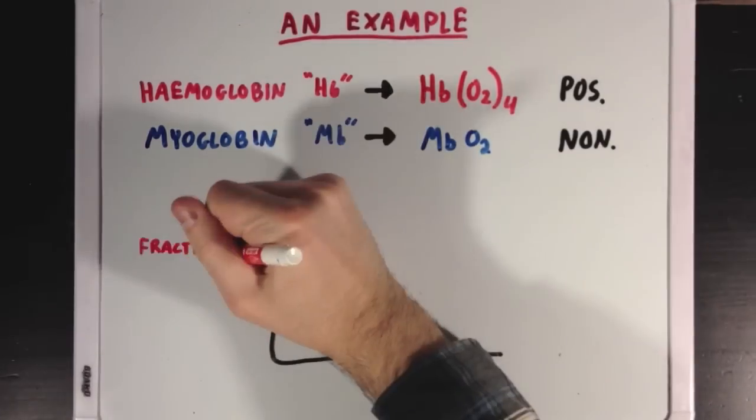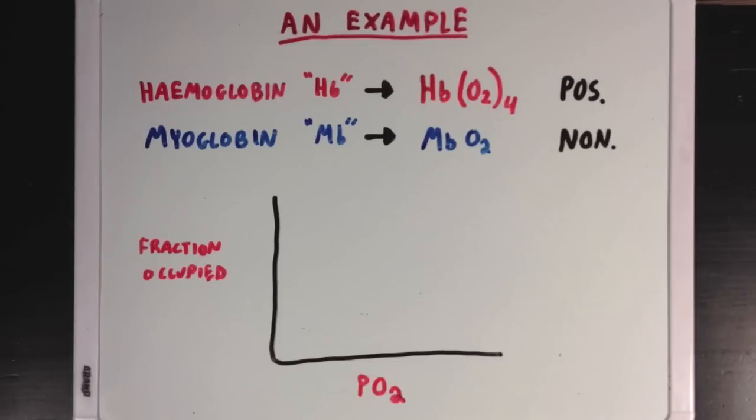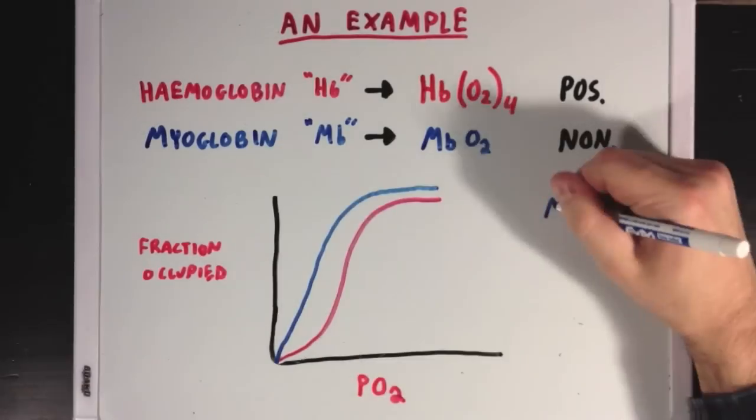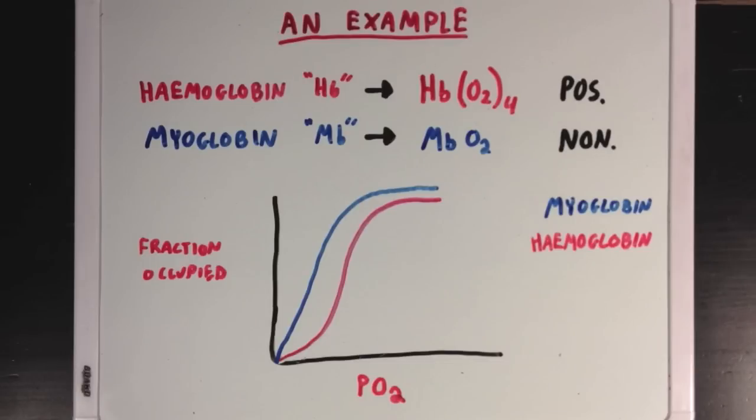If we make a graph where we plot the fraction of active sites bound in each of these proteins versus the pressure of oxygen—remember, oxygen is our substrate here, and since it's a gas, we're going to use pressure instead of concentration—you can see that the red sigmoidal curve associated with hemoglobin's positive cooperative binding looks different from the blue hyperbolic curve associated with myoglobin's non-cooperative binding.